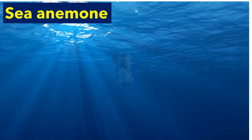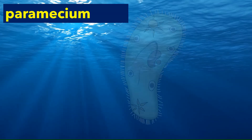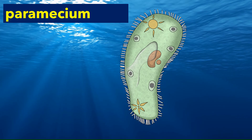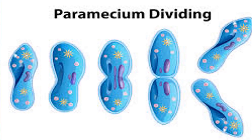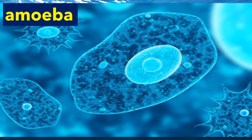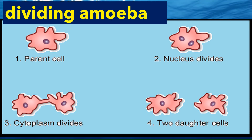Sea anemone can reproduce either sexually or asexually. In asexual reproduction, it undergoes binary fission and fragmentation. Paramecium also reproduces by binary fission — a single paramecium divides into two and each part grows into two different individuals. Another example is amoeba: a parent amoeba divides into two and grows into two daughter cells.